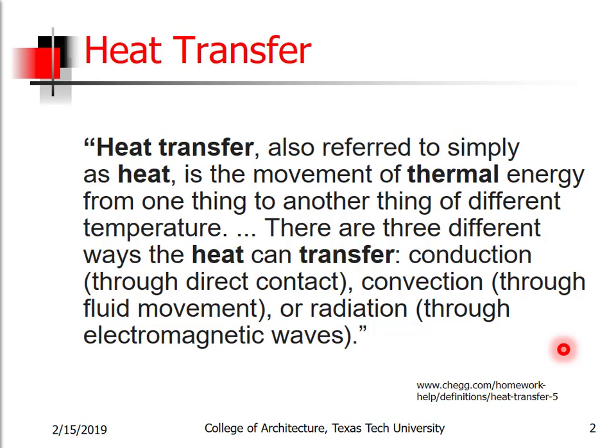And then of course there's convection, which is through the movement of a fluid such as air or water. Probably the most common example of convection is a hot cup of coffee where you blow across the top — you're removing heat from the coffee by blowing across it, making it cooler. And then there's radiation; the most common form of radiation in buildings is through electromagnetic waves such as light.